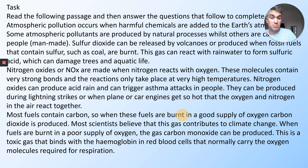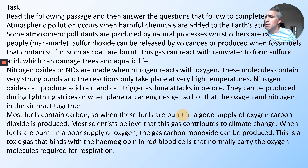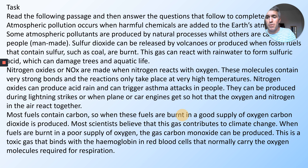So lots of reading — let's begin. Read the following passage and answer the questions that follow to complete the puzzle. Atmospheric pollution occurs when harmful chemicals are added to the earth's atmosphere. Some atmospheric pollutants are produced by natural processes while others are caused by people. Sulfur dioxide can be released by volcanoes or produced when fossil fuels that contain sulfur, such as coal, are burned.